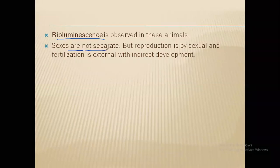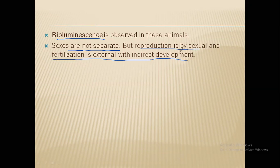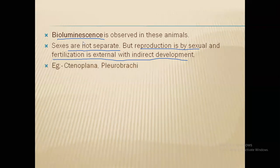The sexes are not separate — male and female are not different organisms but may be present in the same individual. On very rare occasions they can also interchange from male to female. Reproduction is generally sexual and fertilization is external with indirect development. The same organism produces both male and female gametes, which are released into the sea water where they fuse to form a zygote. There is an intermediate larval stage, which is why development is indirect.